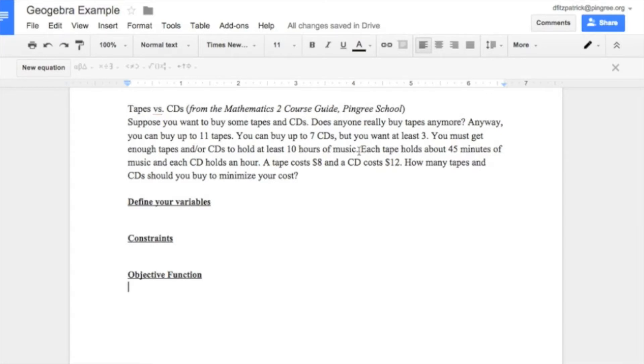Each tape holds about 45 minutes of music and each CD holds an hour. A tape costs $8 and a CD costs $12. So how many tapes and CDs should you buy to minimize your cost?